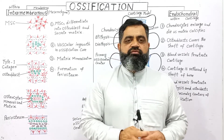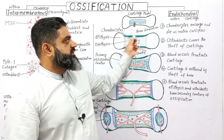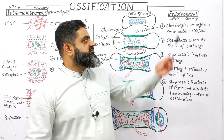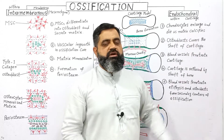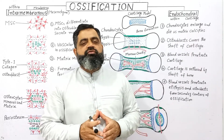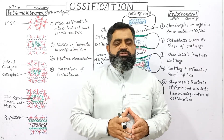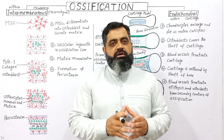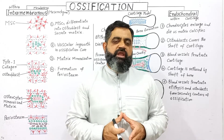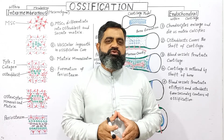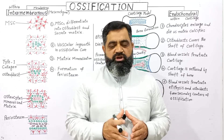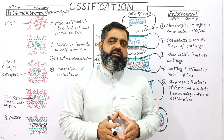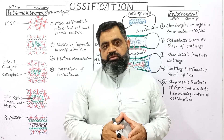The second type of ossification is known as endochondral ossification. 'Endo' means within, 'chondral' means cartilage. So this type of ossification is used to convert cartilage into bone. It usually takes place during embryonic development and also at a fracture site of a bone.